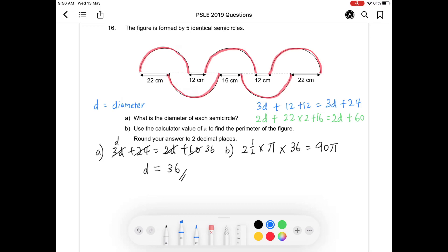don't forget to add 22 here, 12 here, 16 here, another 12 and another 22 here. So I'm going to just write down the equation for part B. 90 pi plus 22 times 2 plus 12 times 2 plus 16. That will give you the answer.